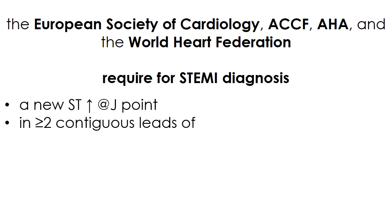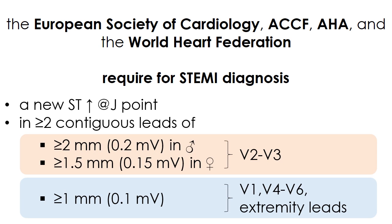The magnitude must be 2 mm or more in males or 1.5 mm or more in females for leads V2 or V3, and 1 mm or more for the remaining precordial leads or for the extremity leads.